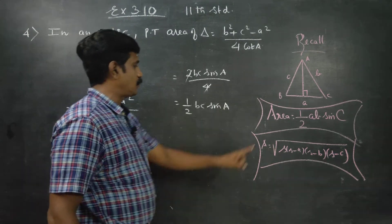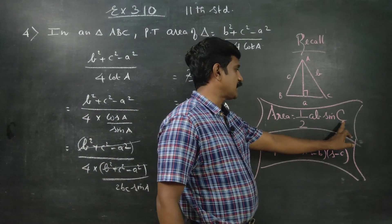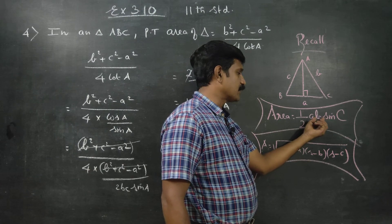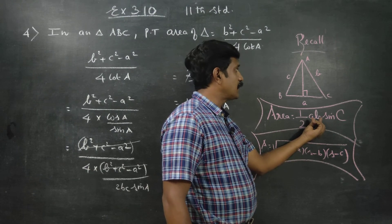1 by 2bc sin a. Which angle with which sides? The included sides.